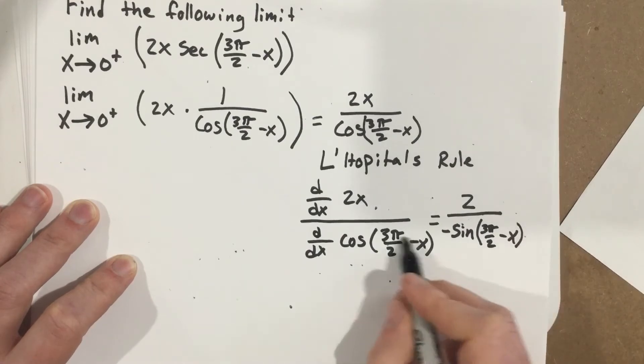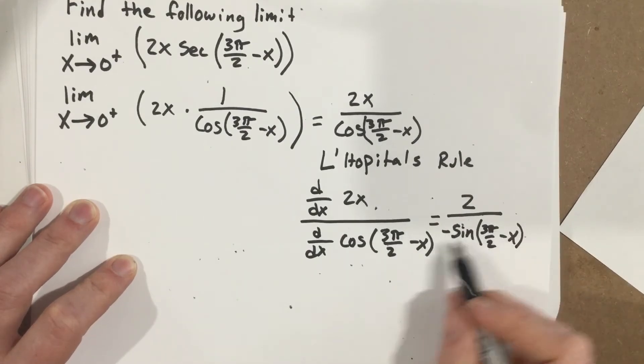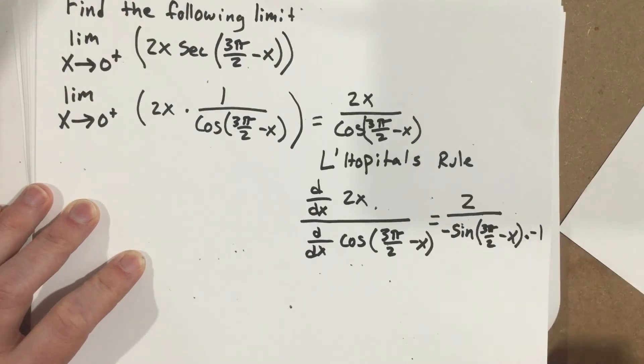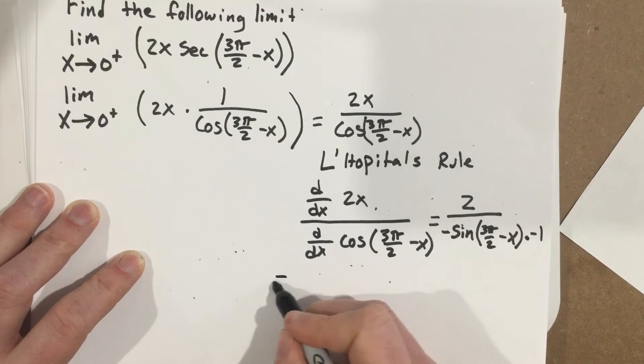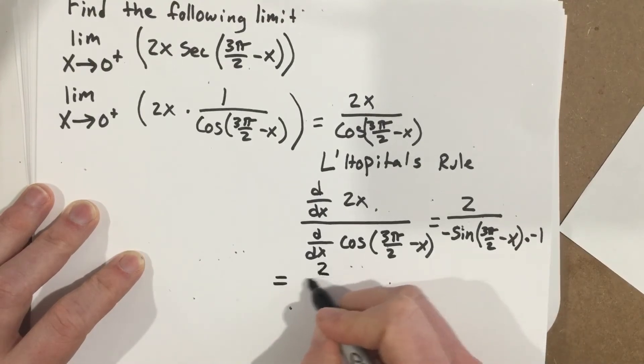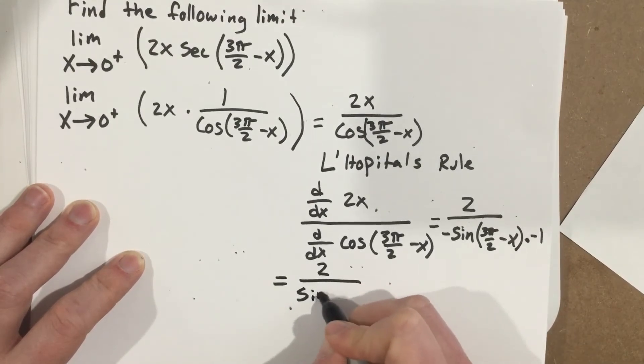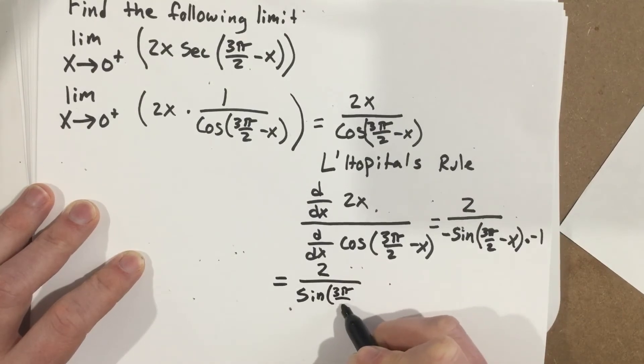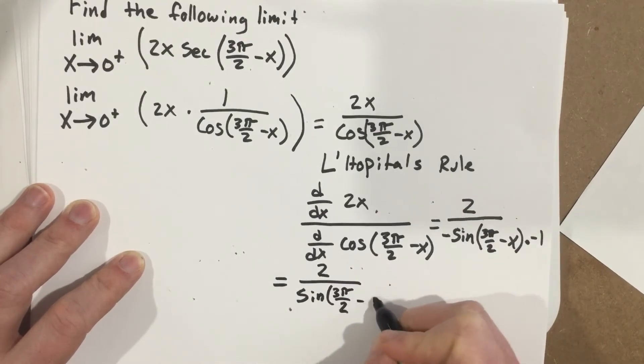And then this is a function on the inside, that was the outside function. I need the inside function, so chain rule. So times negative 1. That's going to equal 2 over sine 3π over 2 minus x.